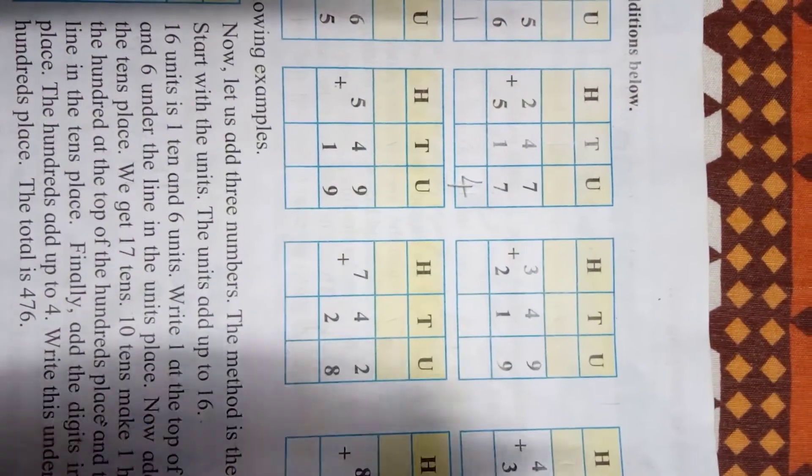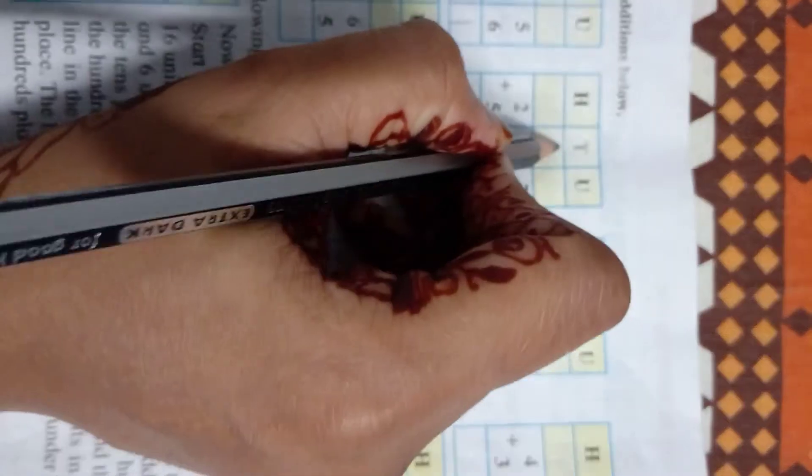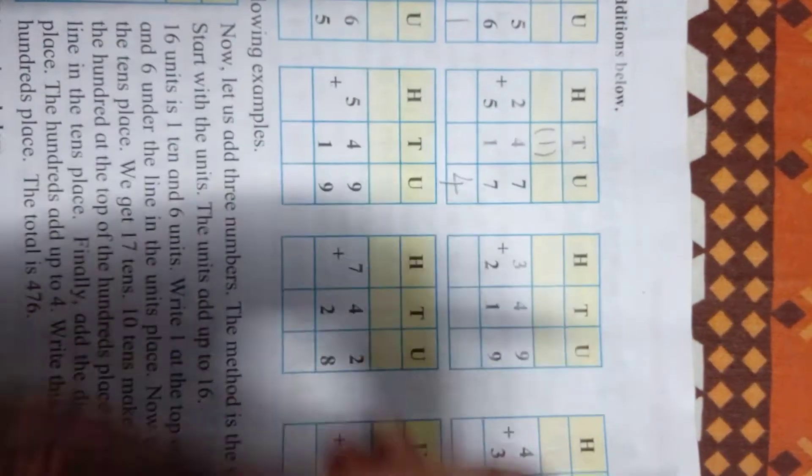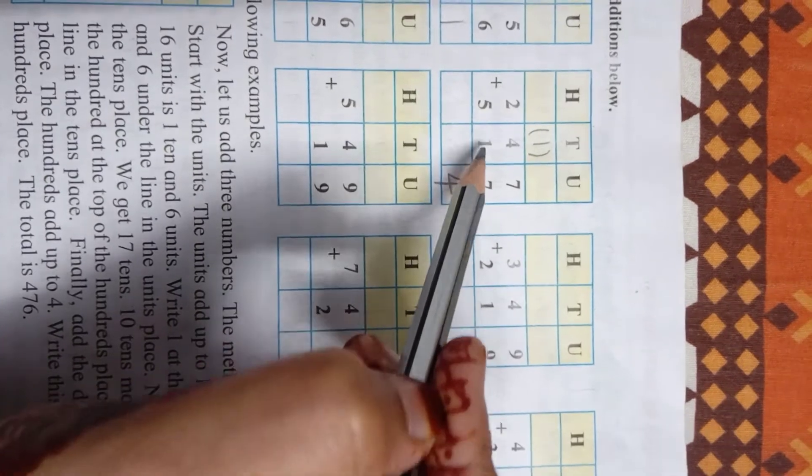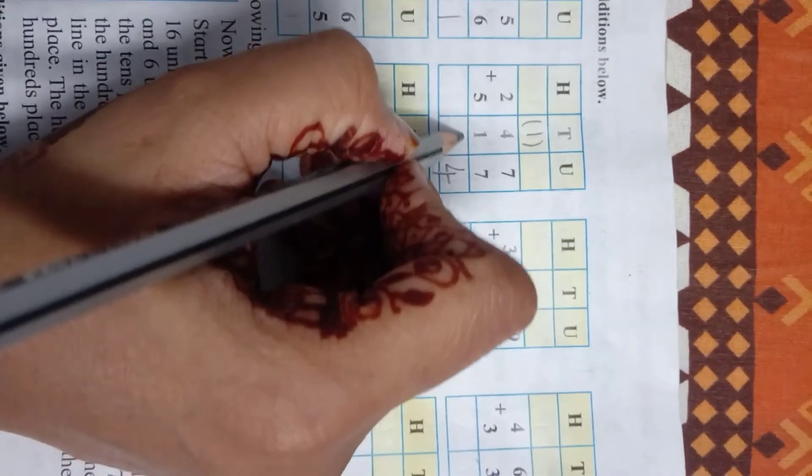So we will write here only 4. First digit we will write, and second digit is 1 that we will give for carry. Then 4 plus 1, how much? 5. And 5 plus 1? 6.